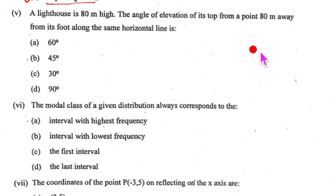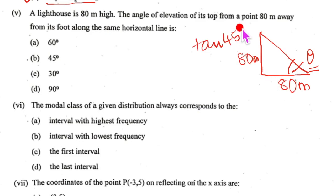Let us come to the fifth one. The lighthouse is 80 meter high and the angle of elevation of its top from a point 80 meter away. So this also is 80 meter and from here we are looking up to the top. This is your angle of elevation from the foot along the same horizontal line. So we need to find out theta. Now tan theta will be 80 upon 80 that is 1 and tan of 45 degrees is 1. So our angle of elevation is going to be 45 that is B.